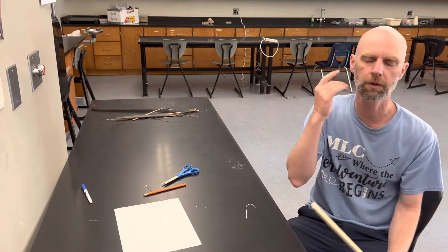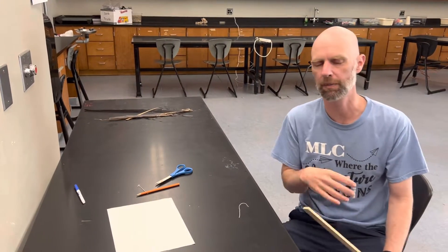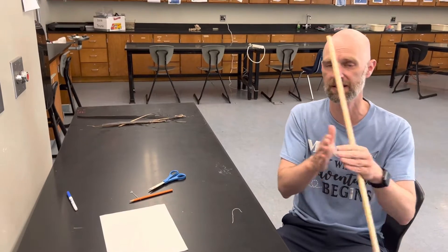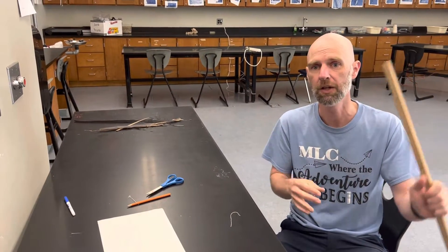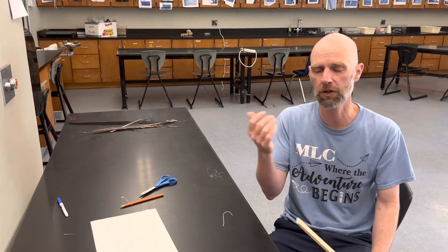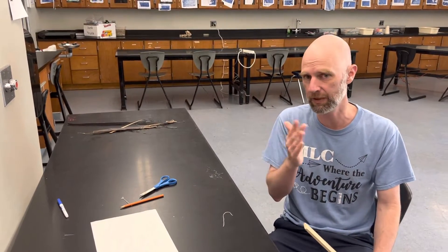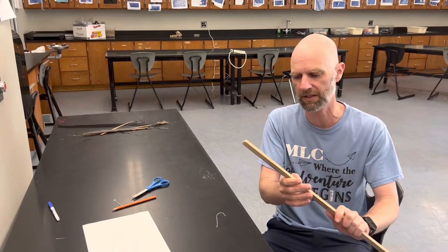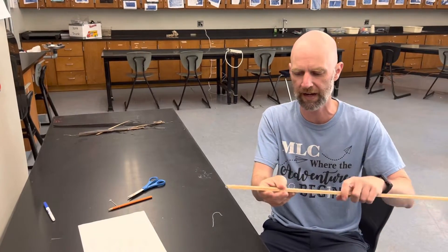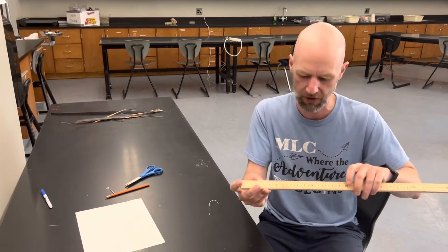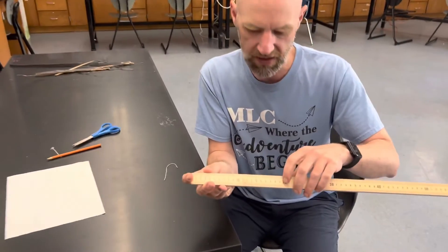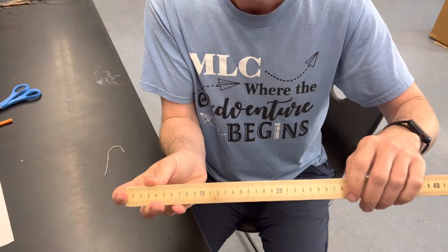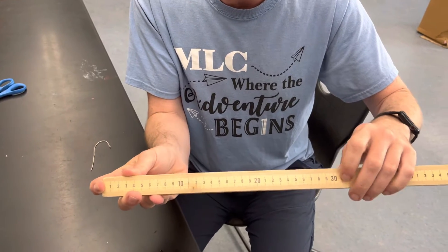Alright people, here we go. You're going to be given a planet for number six and you're going to have to find the distance from the Sun — you have to look up how many AUs it is. For every AU, that's going to be 25 centimeters. So these are the centimeters right here.